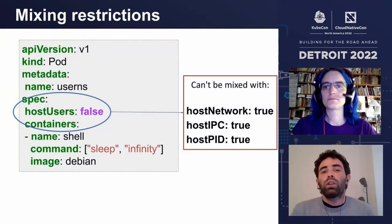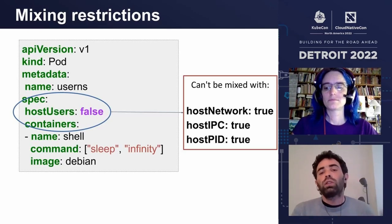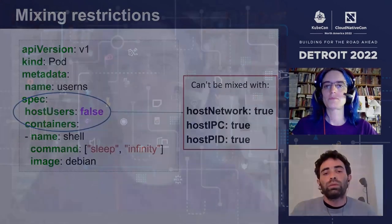How do user namespaces interact with other namespaces that we can also enable or disable in Kubernetes? When we enable user namespaces, we can't use any other host namespace. This means we cannot mix hostUsers false with hostNetwork true, hostIPC true, or hostPID true. On Linux, UIDs are used by the OS to enforce file access permissions, so how does this affect accessing data on shared volumes?